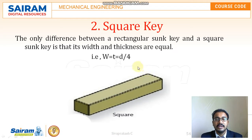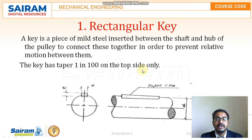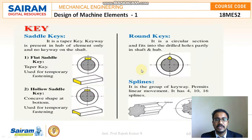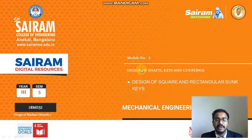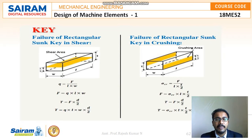So here d by 4 will be the dimension and the key will have a taper. Now we will be checking the same condition. For the square and rectangular key we will be getting the same values except the change in the side dimensions.